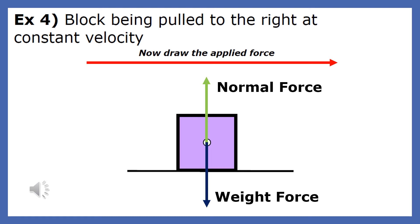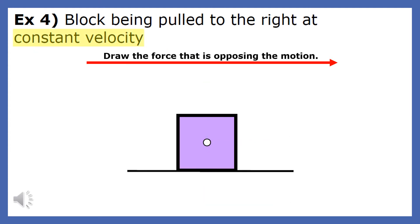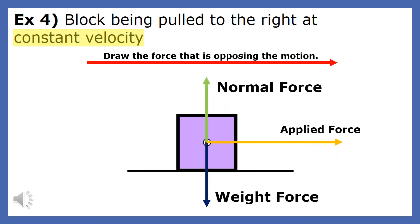We are told that the box is being pulled to the right, this is called the applied force. The last force we need to draw is the friction force. Since we are told that the box is being pulled with a constant velocity, we can conclude that the acceleration is equal to zero. This means that the net force on the body is also zero. Therefore, the friction force is equal to the applied force.